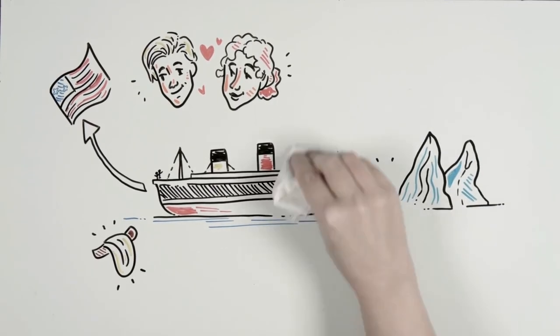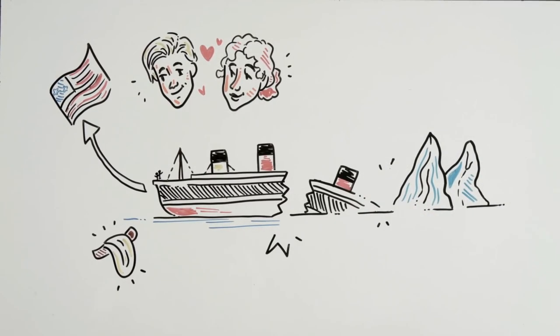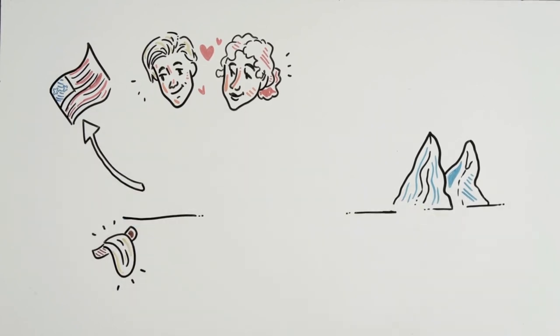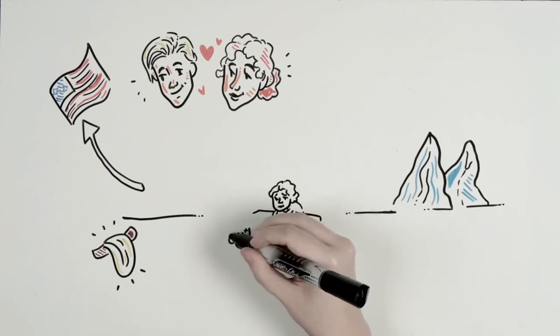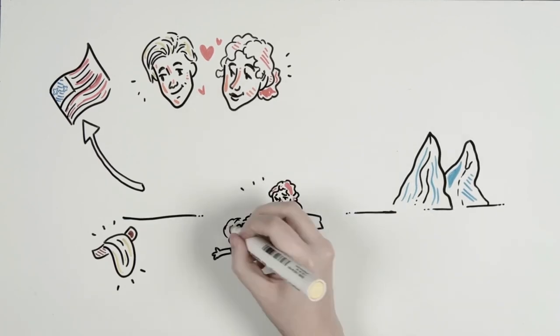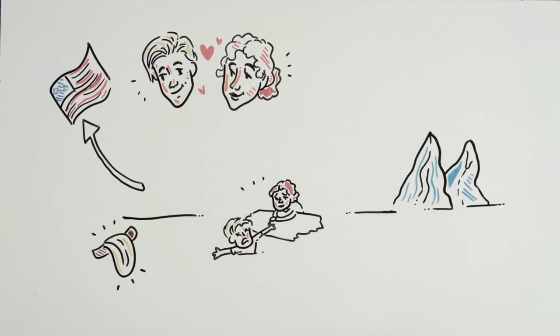Days later, the Titanic hits an iceberg causing a hole, and it sinks. We leave you the link to the video about what happened. After fleeing from her fiancé's bullets, Rose and Jack ended up in the icy sea. Rose on the famous board and Jack in the water, causing the young man to die of hypothermia.